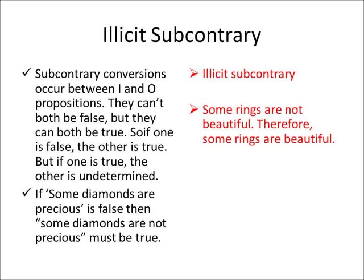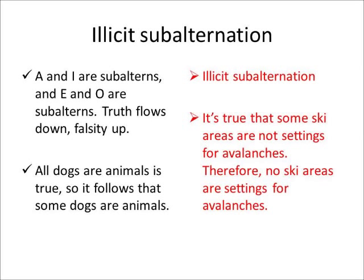But now look at illicit subcontrary. If I argue 'some rings are not beautiful' — that's an O proposition, so I'm saying that's true — therefore 'some rings are beautiful,' that's an I proposition, I'm saying that's true. But you can't infer an I proposition is true from the fact that an O proposition is true, because they're subcontraries and they could both be true. So the fact that the premise is true — that O is true — we just don't know if the conclusion is true or false. Therefore this is fallacious. Even if the premise is true, the conclusion could be false. We call it illicit subcontrary.